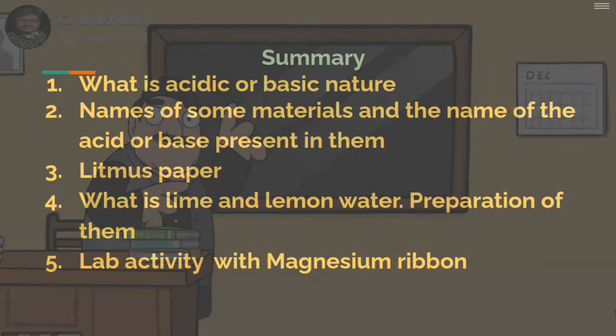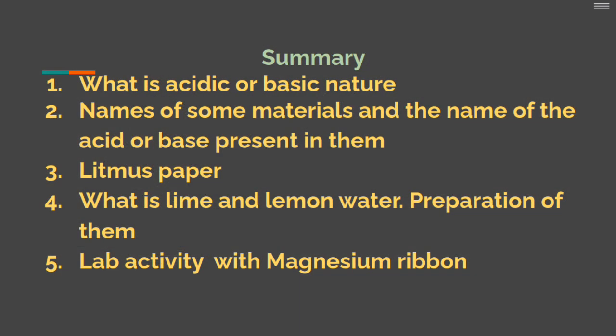Now I would like to give you the summary of this lecture. What is acidic or basic nature? Names of some materials to be tested by litmus paper. What is litmus paper? What is lime water and lemon water and preparation of them? And finally, lab activity with magnesium ribbon.